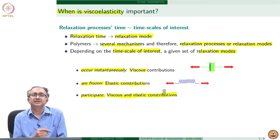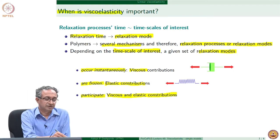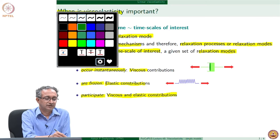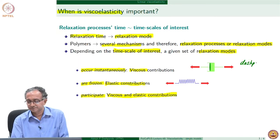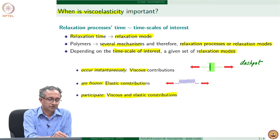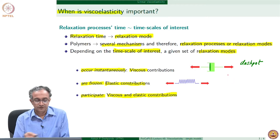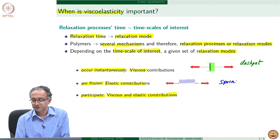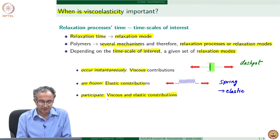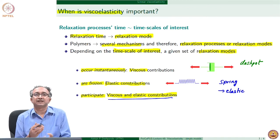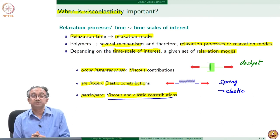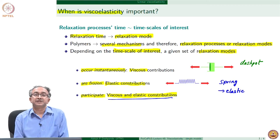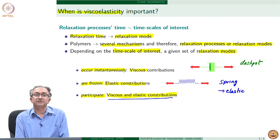We understand these viscous and elastic contributions by using mechanical analogs. A dashpot is a mechanical analog for viscous behavior, while a spring is another mechanical analog for elasticity. A viscoelastic material will have combinations of viscous and elastic responses, and each dashpot and spring comes with characteristic time scales. Therefore, the overall response of a viscoelastic material will depend on the characteristic constants of each of these elements.